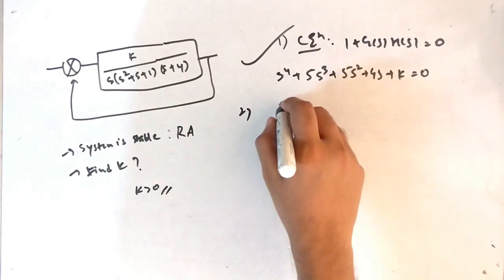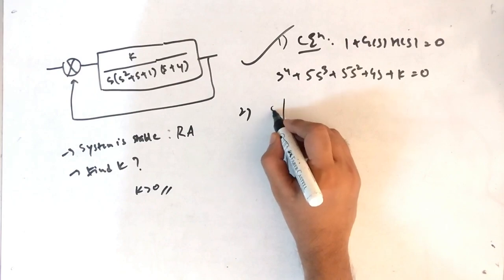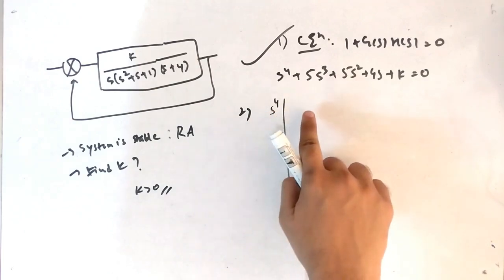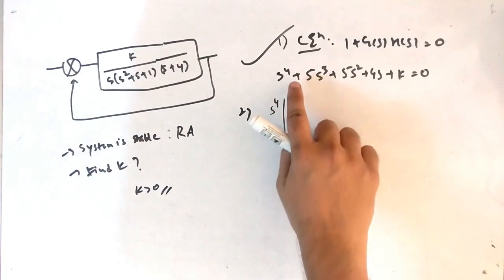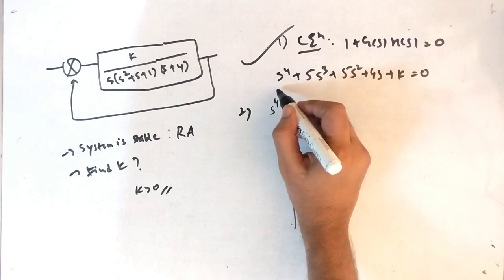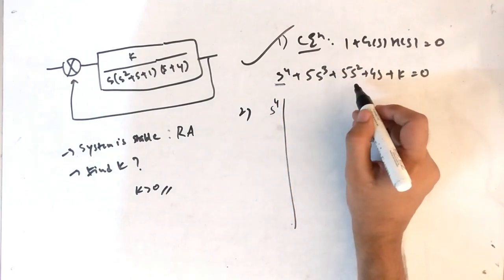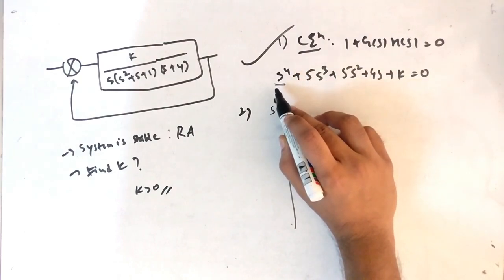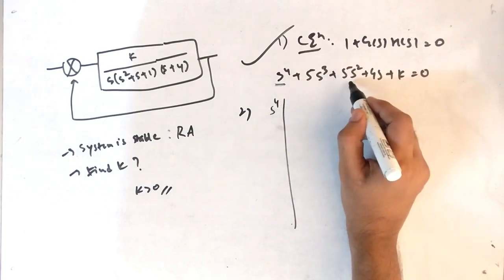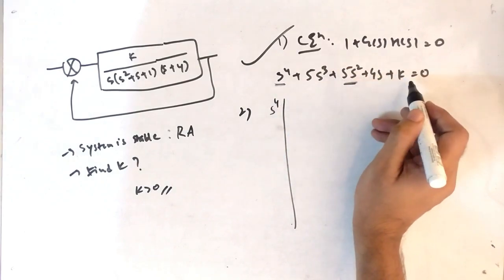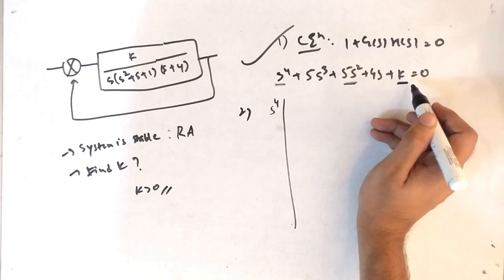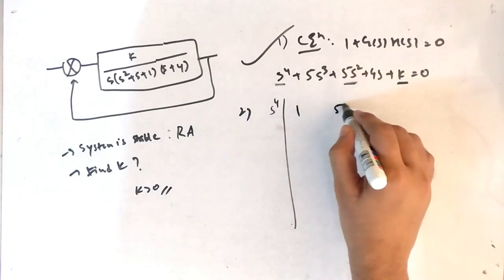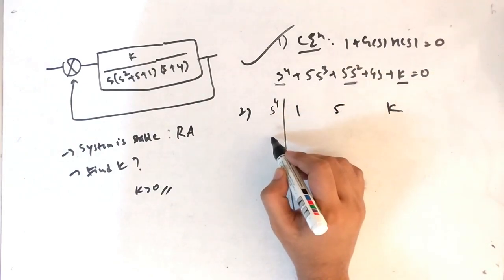To use the Routh array logic, write the highest power of s, which is s⁴. Since the highest power of s is even, all the even-powered coefficients go in the first row — s⁴ is even, then 5s², then k (which is s⁰, also even). So write the coefficients: 1, 5, k.